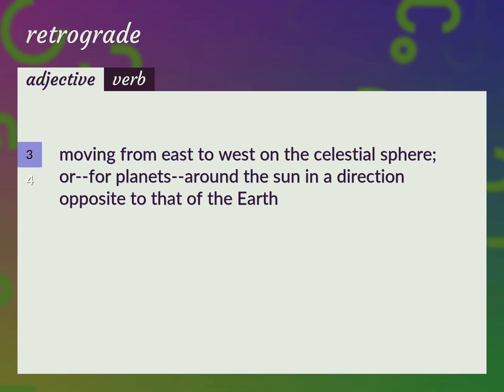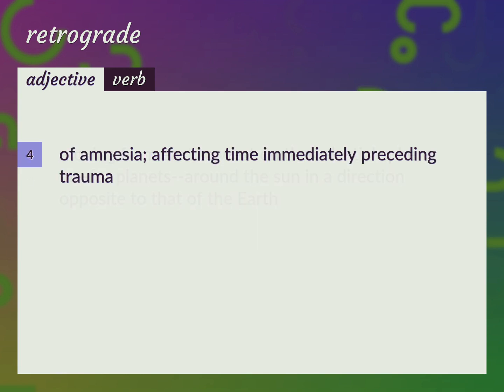Moving from east to west on the celestial sphere. Or, for planets, around the sun in a direction opposite to that of the earth. Amnesia: affecting time immediately preceding trauma.